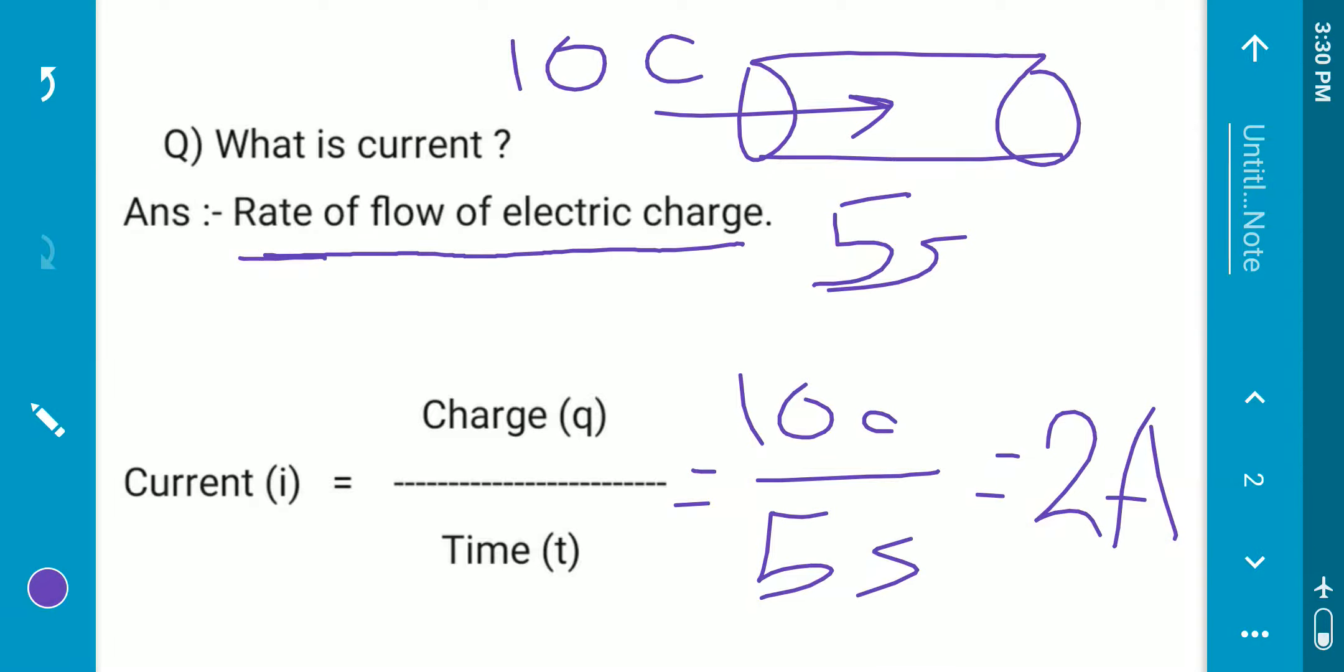Then the total current flowing through this conductor would be 2 ampere, where ampere A is the unit of current. Coulomb C is the unit of charge, s second is the unit of time.